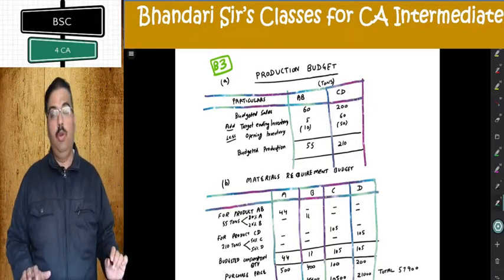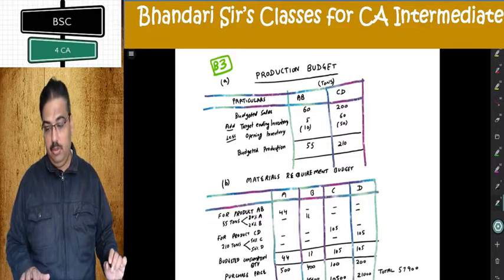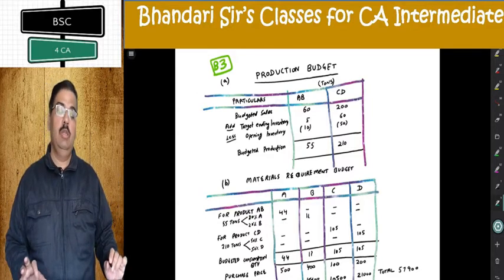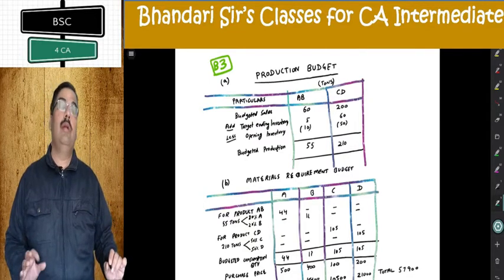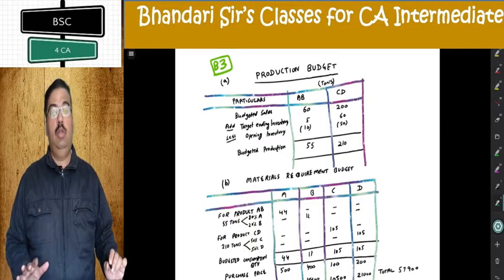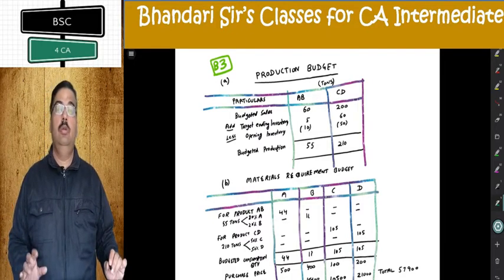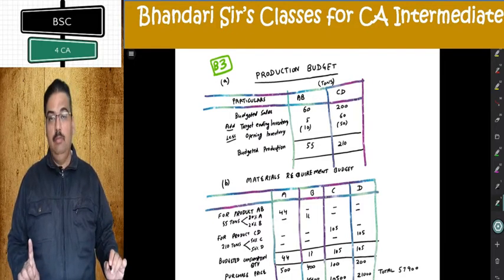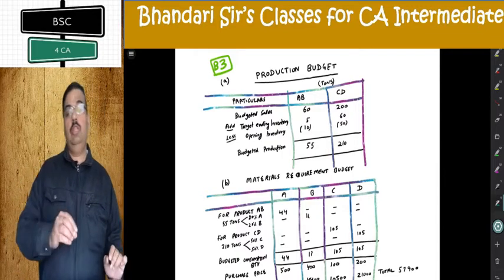So friends, we continue with question number B3 of your functional budgets. B3 is a very simple easy question, 3-4 marks. You only need to understand there are two products namely A, B and C, D, and there are 4 materials namely A, B, C and D. If you understand this much, the question is easily done.